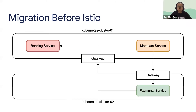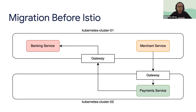Merchant service will call a gateway, which will forward traffic to payment service. Because payment service also communicates with banking service, it also needs to communicate through a gateway. This is a simple topology — in reality, in our clusters, we actually have more complicated topologies with multiple services calling each other, creating dependencies that are really hard to migrate.